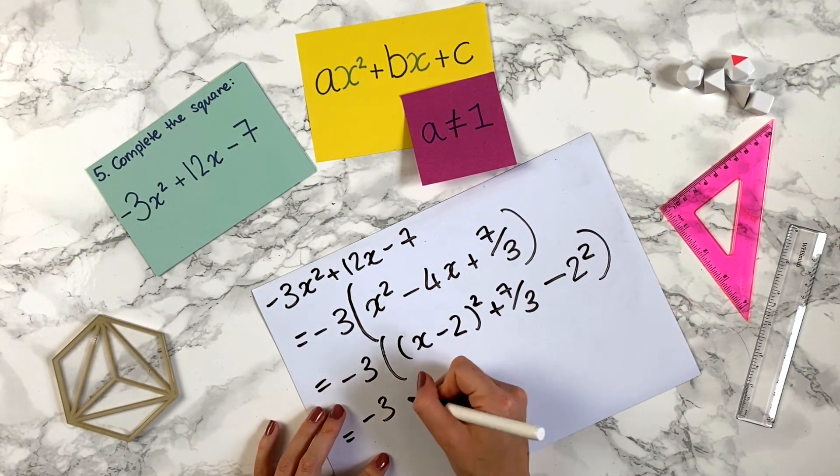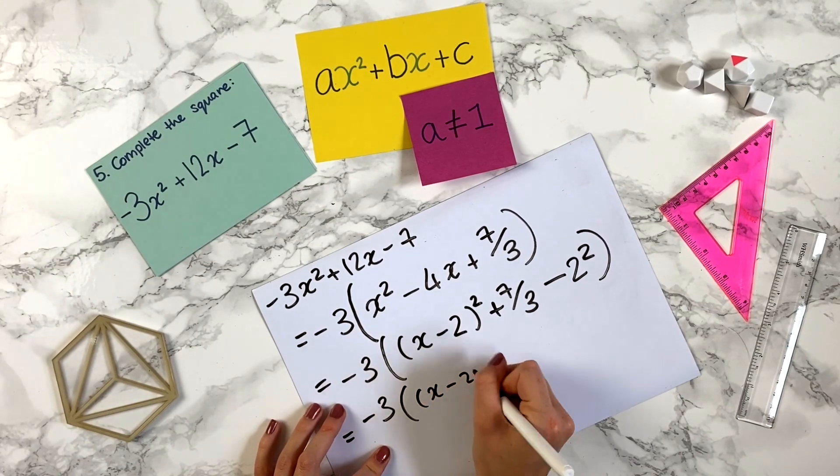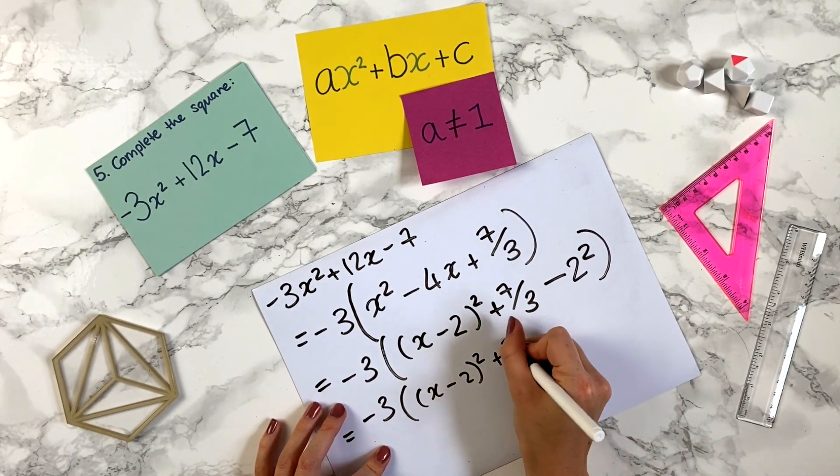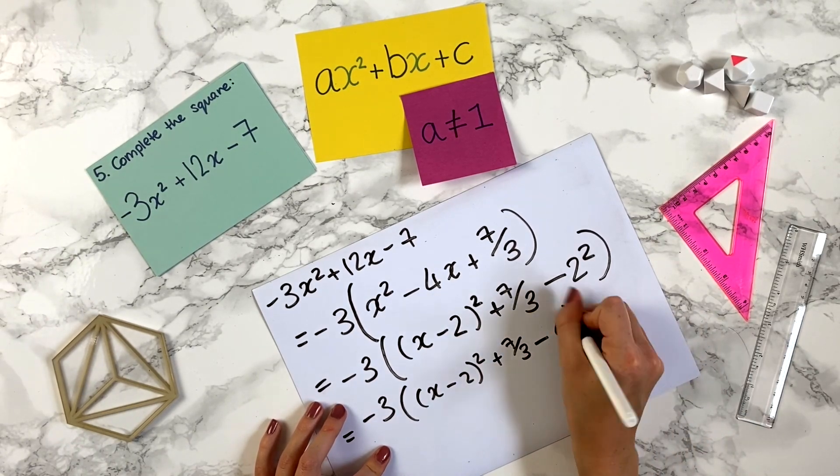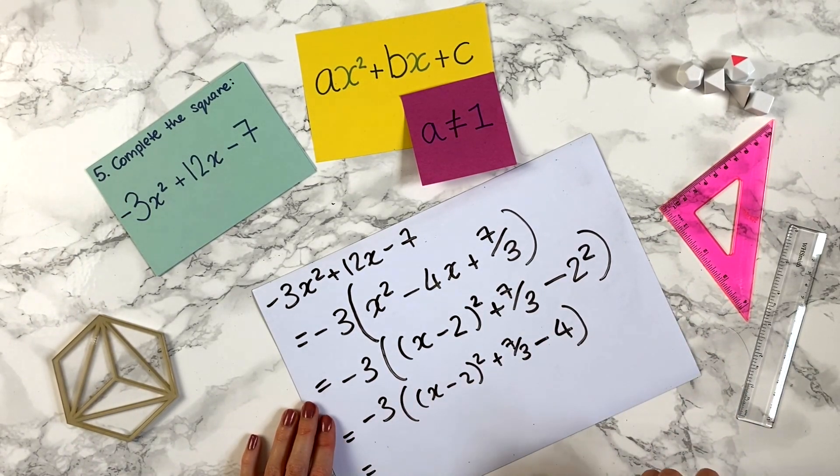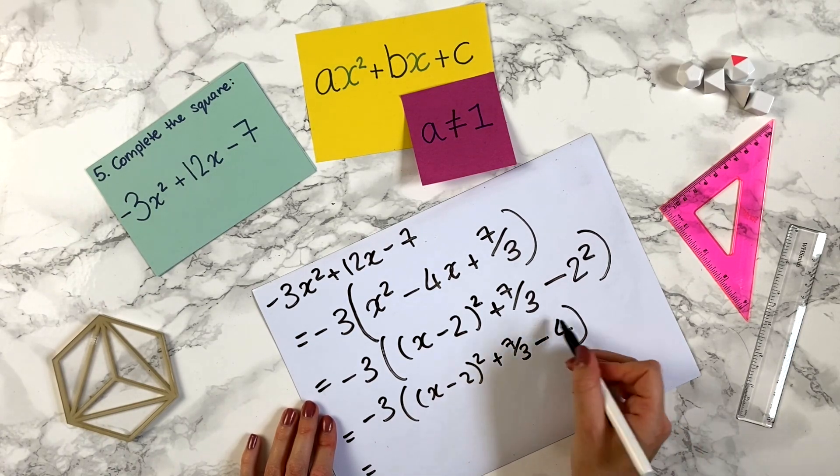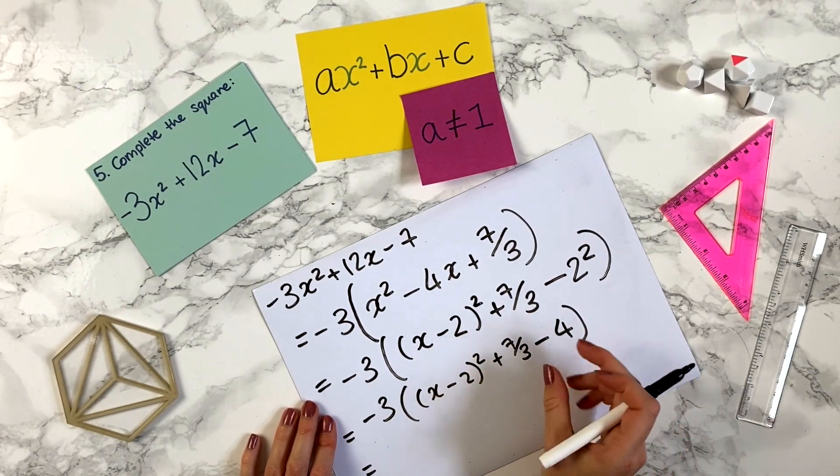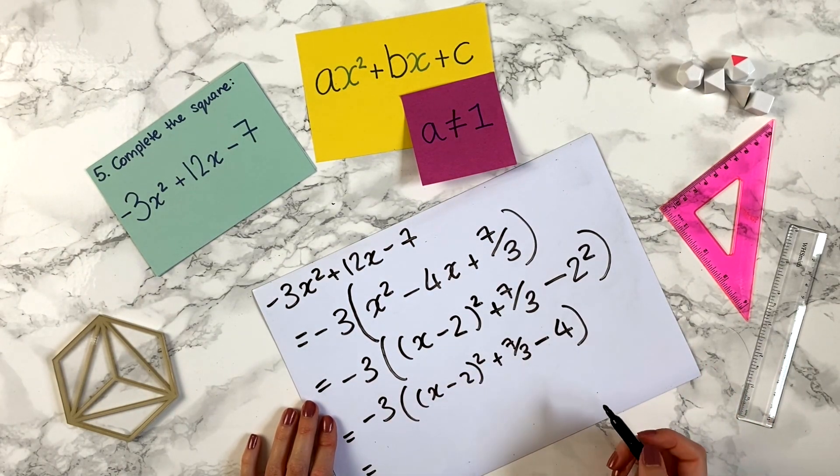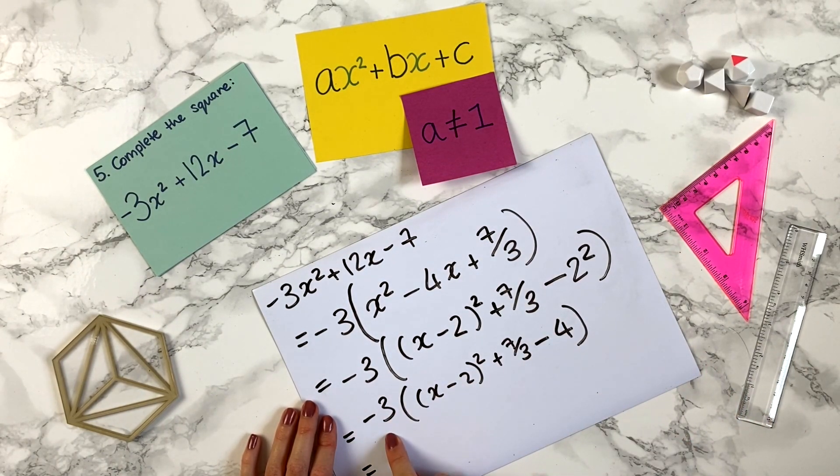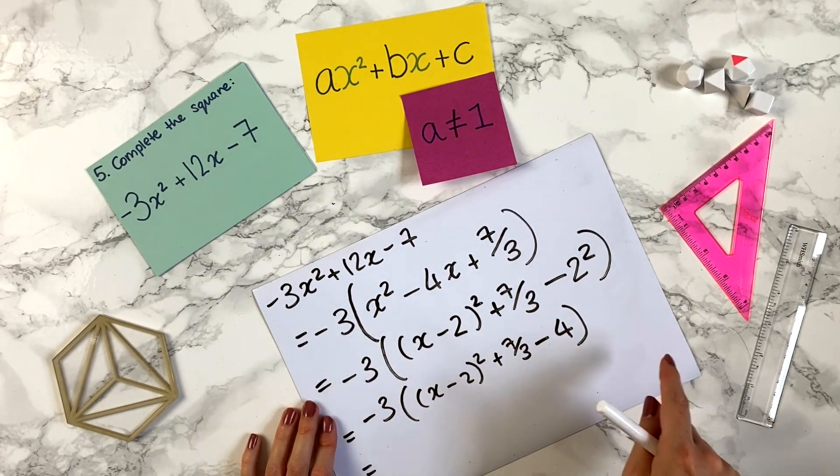Let's simplify that so we've got x minus 2 squared, so we've got plus 7 over 3 minus 4. Okay so here what we did before was we simplified this together and combined these terms and then times everything by minus 3, but because we have a fraction we can actually times everything by minus 3 now and I think that will make things easier.